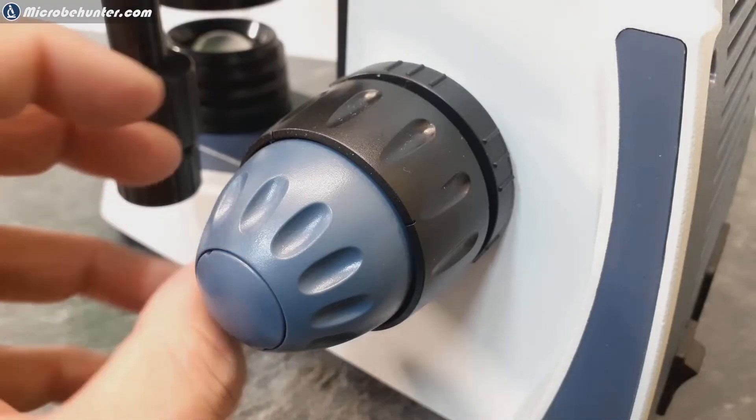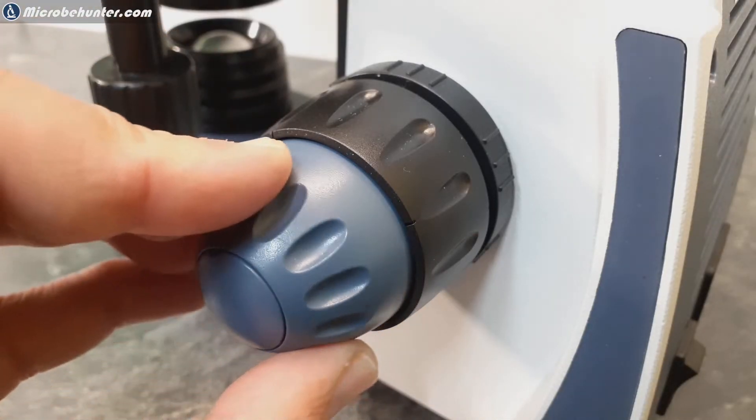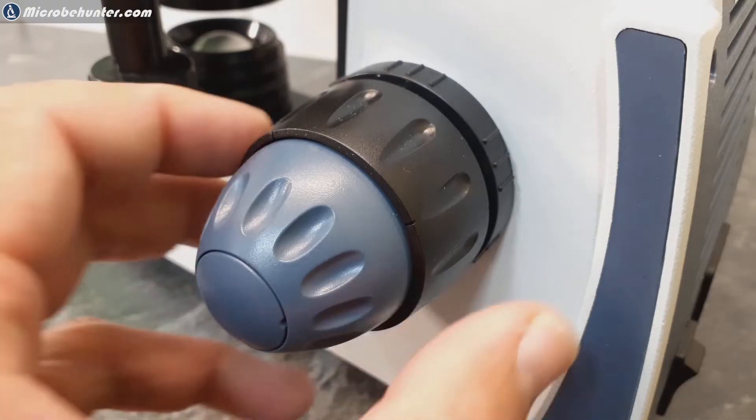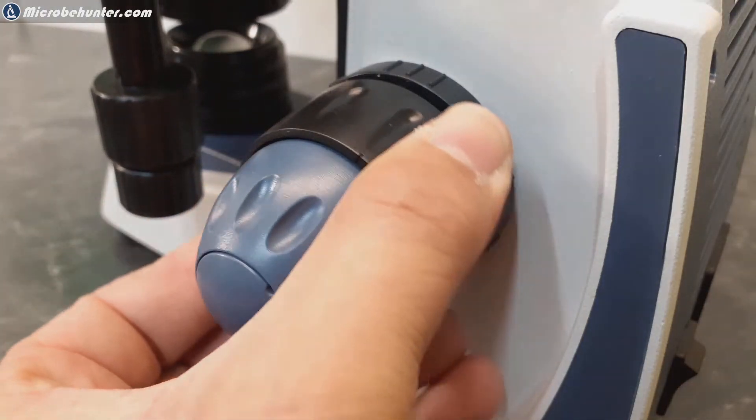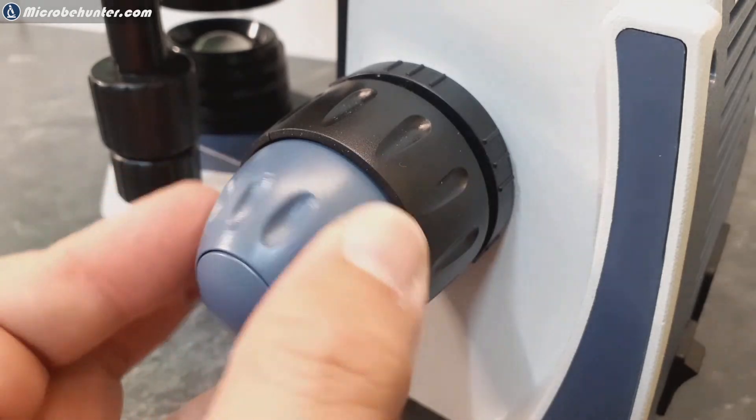There are certain microscopes where they're mechanically coupled, and that's not a problem really, but I just feel that this feels more precise and less spongy. I've seen some microscopes that when you turn them it feels a little bit soft and spongy, and this is definitely not the case here.